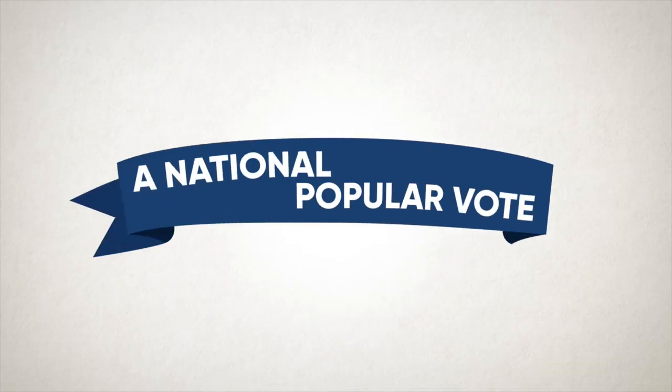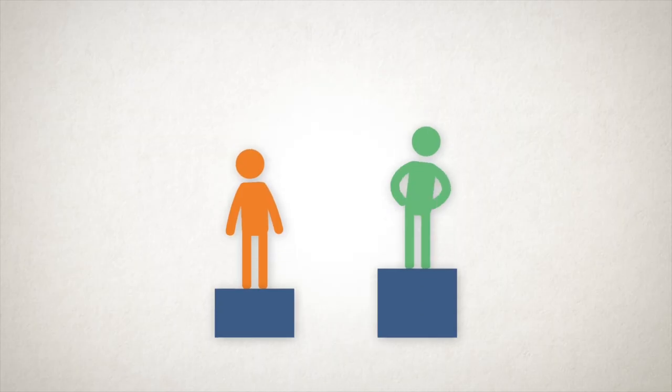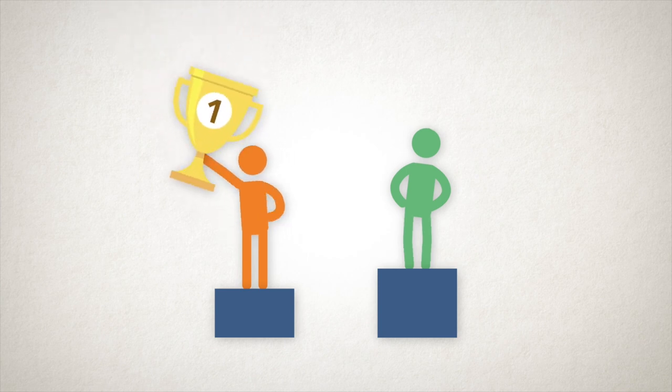A national popular vote is pretty simple: whichever candidate wins the most votes nationwide becomes the president. All votes carry equal weight regardless of the state they are cast in. A national popular vote would prevent a situation where a candidate loses the presidency despite winning the most votes nationwide — something that has happened more than a few times in American history.